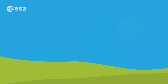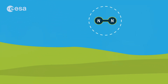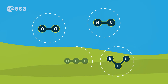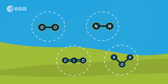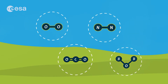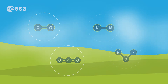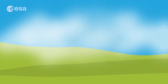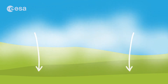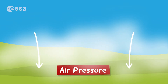You can't see it with your eyes, but air is a mix of different gases which are all around you, such as the oxygen we breathe. The weight of these gases pushes down on Earth and creates air pressure.